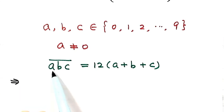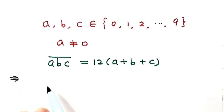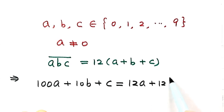Because A is in the hundredth place, we can write it as 100A. B is in the tenth place, so we write it as 10B, then plus C. Let's expand the right-hand side into 12A + 12B + 12C.